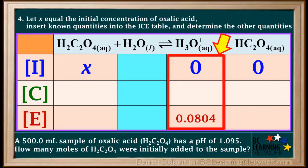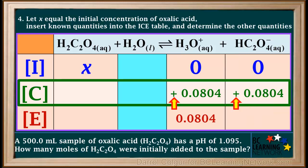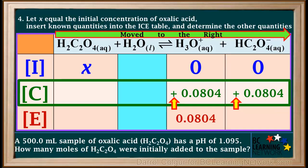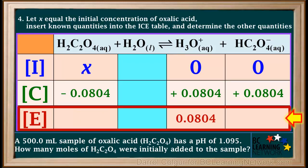We write 0.0804 in the cell for equilibrium concentration of hydronium. The hydronium ion concentration started out as zero molar and went up to 0.0804 molar at equilibrium, so its change in concentration is an increase of 0.0804 molar. Hydronium and hydrogen oxalate both have a coefficient of 1 in the ionization equation, so the concentration of hydrogen oxalate also increased by 0.0804 molar. Because the concentrations of the products increased, the reaction moved to the right to establish equilibrium. Therefore, the concentration of oxalic acid decreased.